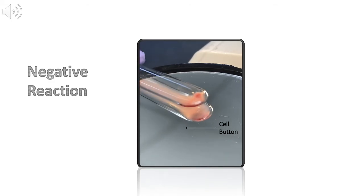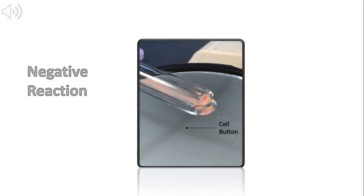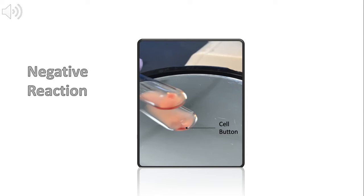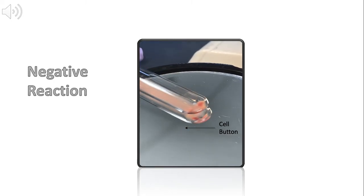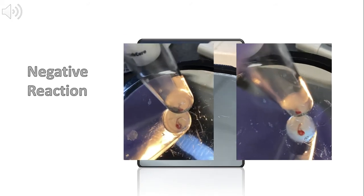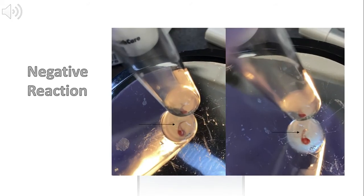If the cells agglutinate, the reaction is considered to be positive and a negative reaction is one in which no agglutination is present. A tail-like visual pattern where cells freely float off the cell button is a characteristic example of a negative reaction.